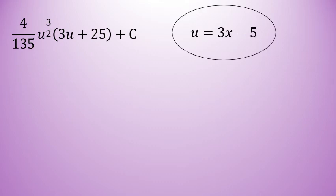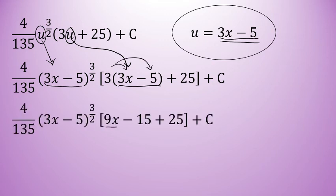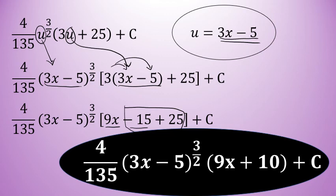Our original problem was in terms of x, so we will rewrite our final answer in terms of x as well. Recall that this problem began when we let u equal 3x minus 5. So to finish this problem up and find a final answer, we'll substitute all occurrences of u with the expression 3x minus 5. In my simplified version of the integral, there are two occurrences of u. Both of those u's will be replaced with 3x minus 5. I'll have one little step left. I'm going to distribute the three and combine like terms. 3 times 3x is 9x. 3 times negative 5 is negative 15. Negative 15 and 25 have a sum of positive 10. The final answer is 4 over 135 times the quantity of 3x minus 5 to the three halves times the quantity of 9x plus 10 plus c.